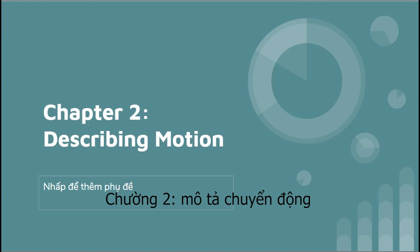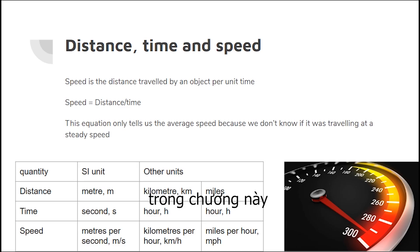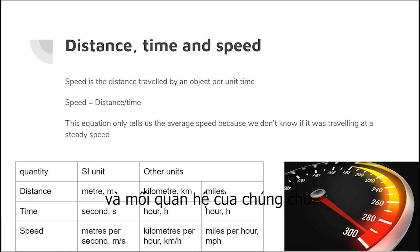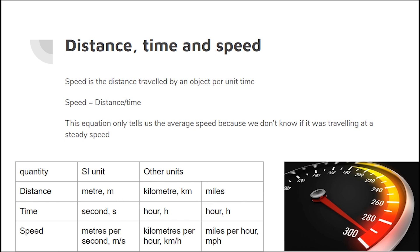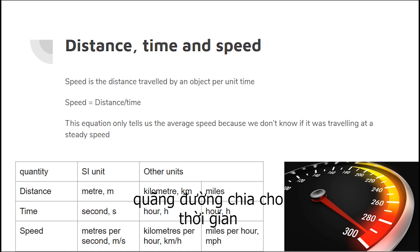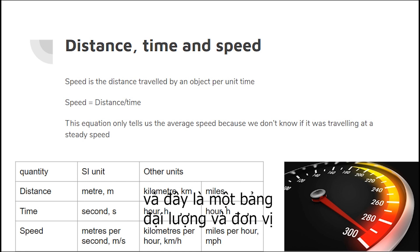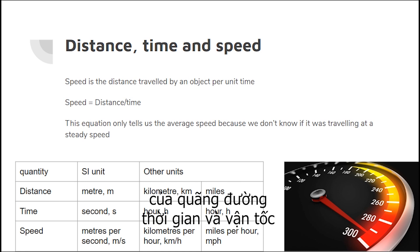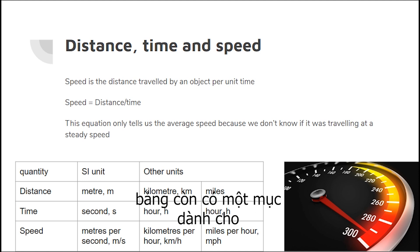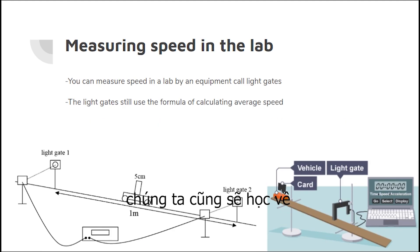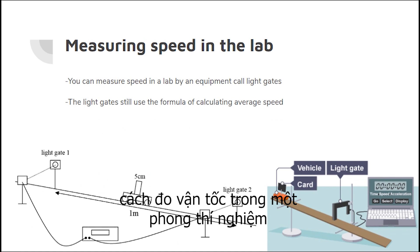Chapter 2: Describing Motion. Section 2.1: Understanding Speed. In this unit we learn how distance, time, and speed relate to each other. Speed is the distance traveled by an object per unit time, and the equation is: speed equals distance over time. Here is a table of quantities and units for distance, time, and speed, including SI units.